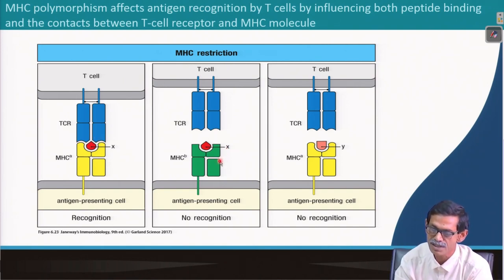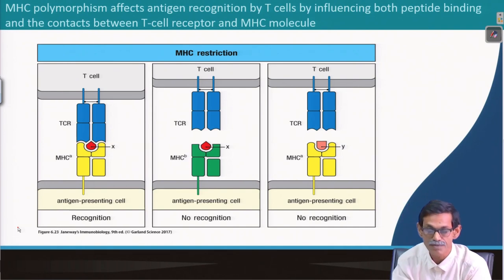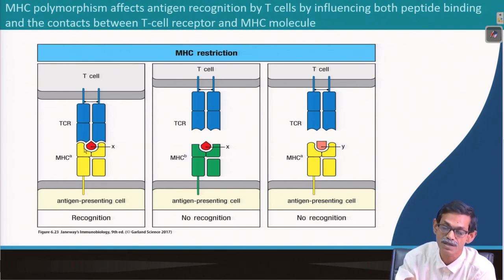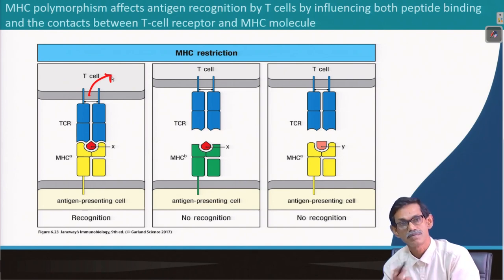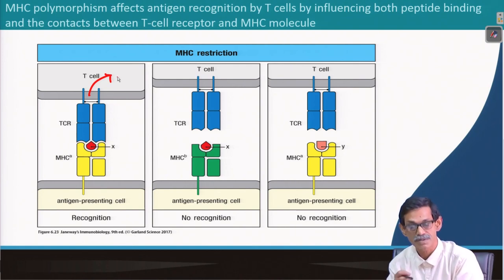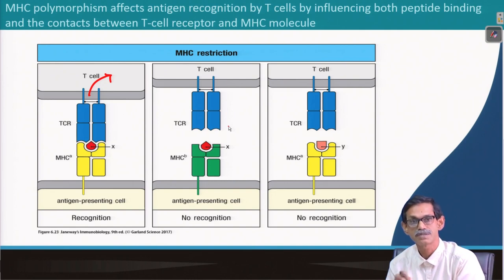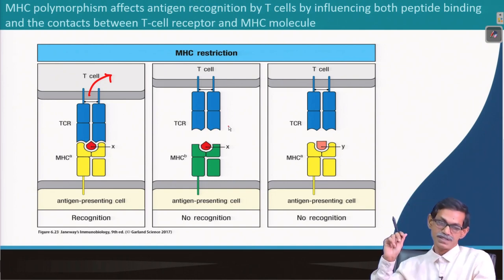Neither this case nor this case will have any recognition, and if there is no recognition, the T cell will not do anything, because this strong interaction is very important. If this interaction happens, only then will a signal go inside and give the cell a response to do the next job — like proliferation, producing different cytokines to activate B cells, and since this is MHC class 1, to be activated as effector cells so that cytotoxic T cells can kill tumor cells or virus-infected cells. This phenomenon is called MHC restriction.